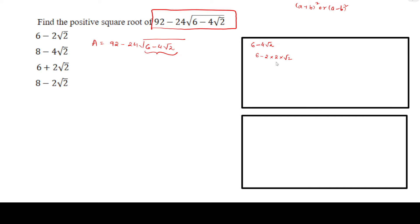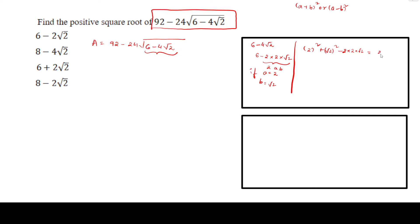If you see, this is in the form of 2AB. If we assume A equals 2 and B equals root 2, let's see what we can get. 2 whole square plus root 2 whole square minus 2 times 2 times root 2, which is nothing but 2 minus root 2 whole square.